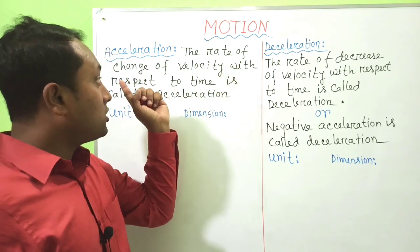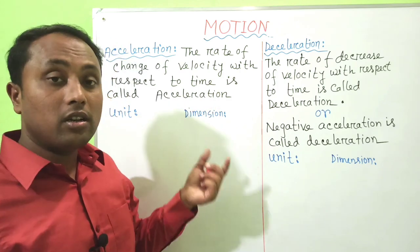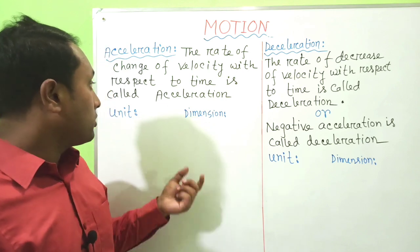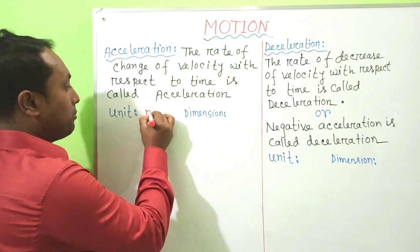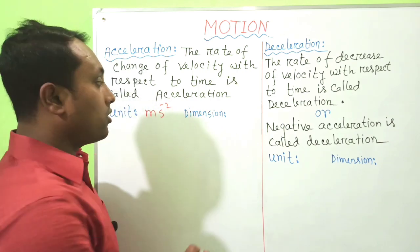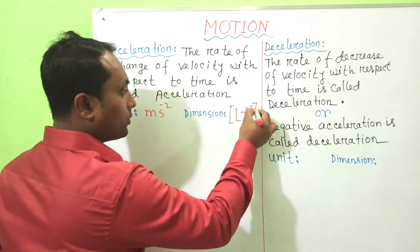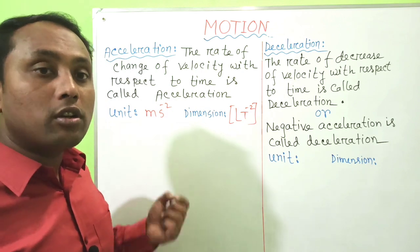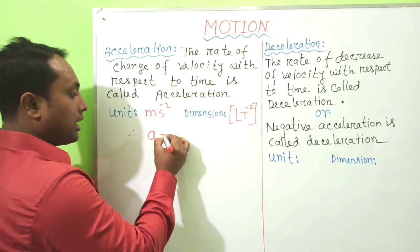If there is a change of velocity with respect to time, then acceleration will definitely be positive. The unit of acceleration is ms⁻² (meter per second square), and the dimension of acceleration is LT⁻².